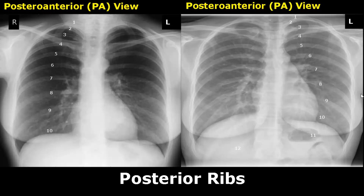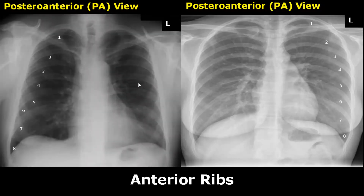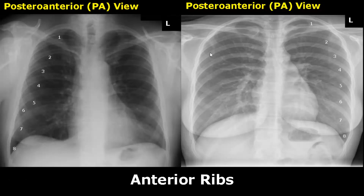The anterior ribs appear slanted and they are crossing over with the posterior ribs. Always remember that these slanted appearing ribs will be the anterior ribs on a PA view.